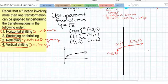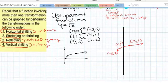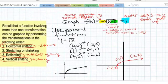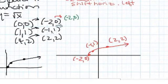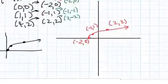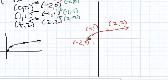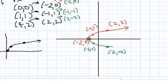Next we do the reflection — there's no stretching or shrinking here, so we go straight to reflecting. It's a vertical reflection because the negative is outside the function, so we replace every y with its opposite. The point (-2, 0) stays at (-2, 0) since the opposite of 0 is still 0. But (-1, 1) becomes (-1, -1), and (2, 2) becomes (2, -2). This reflects the function over the x-axis.